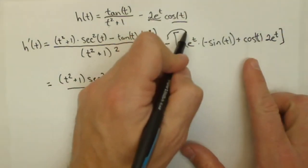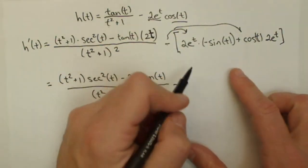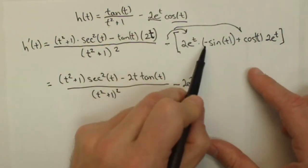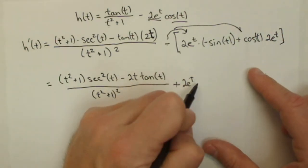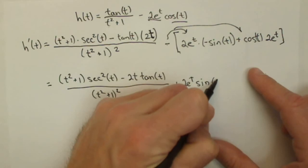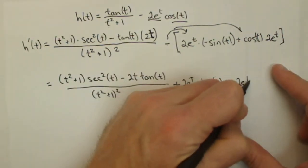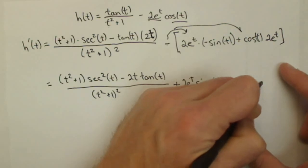and if we want, we can distribute this negative now to drop the parentheses, minus 2e to the t, although this negative, we'll turn that back into a plus, sine of t minus 2e to the t cosine of t.